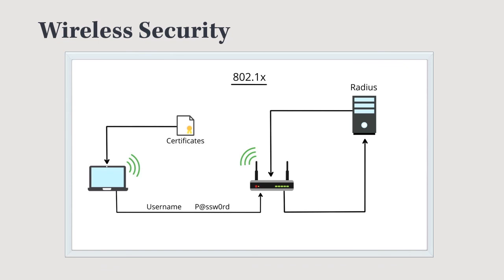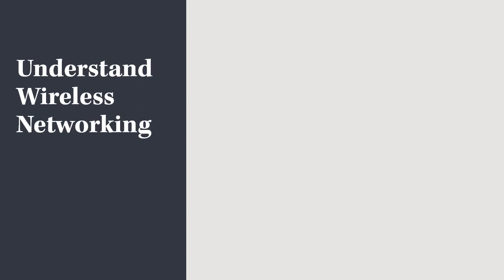Here's how the RADIUS server works: the device on the left attempts to connect to the wireless access point, which asks for authentication. The device sends a username and password, which is forwarded to the RADIUS server. The RADIUS server checks its tables and databases and responds yes or no. If yes, it sends authentication approval back to the wireless access point, and the wireless access point allows the connection. That covers the Understand Wireless Networking objective for the MTA Networking Fundamentals exam.